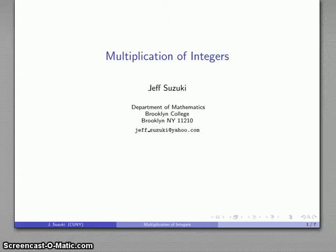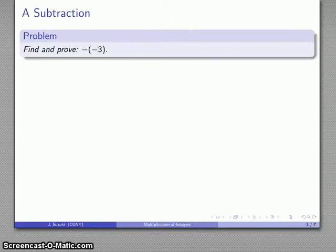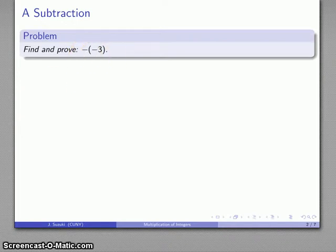Alright, so let's take a look at the multiplication of integers. To begin with, we'll start with something that seems to be a slightly different type of problem, but we're going to find the additive inverse of the additive inverse of 3.